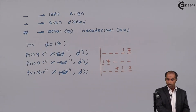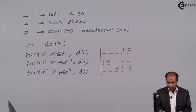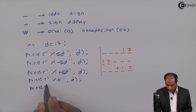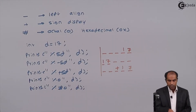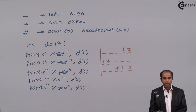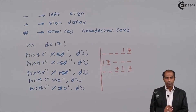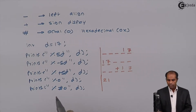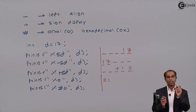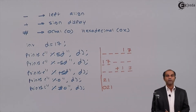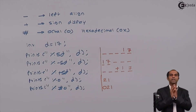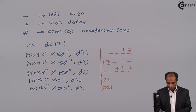Now how is an octal number displayed? When I say printf("%o", d), it displays the octal equivalent of 17, which is 21. But as per the rules of C language, an octal value should always be preceded by zero. That can be done using the hash flag. The hash flag precedes the number with zero, displaying it as 021. So when the user sees the leading zero, they understand the displayed value is an octal value.